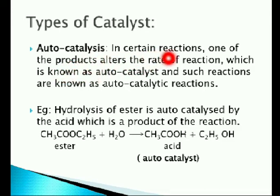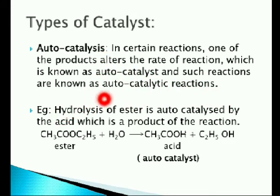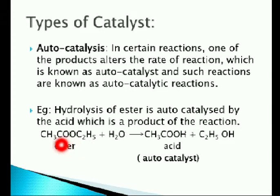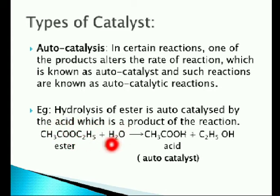The third type is auto catalyst and auto catalysis. In certain chemical reactions, one of the products alters the rate of reaction, which is known as auto catalyst, and such reactions are known as auto catalytic reactions or auto catalysis. Example: hydrolysis of an ester is auto catalysed by the acid formed as a product. Ethyl acetate undergoes hydrolysis to form acetic acid and ethanol. As soon as acetic acid is formed, it acts as the catalyst and increases further hydrolysis of ethyl acetate. Hence, acetic acid acts as the auto catalyst.